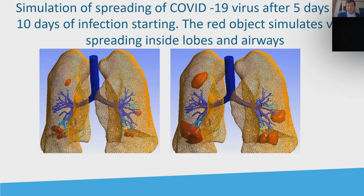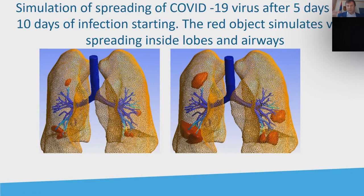On these pictures, left to right, you can see simulation of the spreading of COVID-19 virus after five days and after ten days of infection starting for one particular patient. These red objects actually simulate virus spreading inside the lobes. You can see after five days and after ten days how it's growing and how big the infection parts are across all of the lobes. After this infection, the patient needs a mechanical ventilator and it's very difficult for him to breathe.